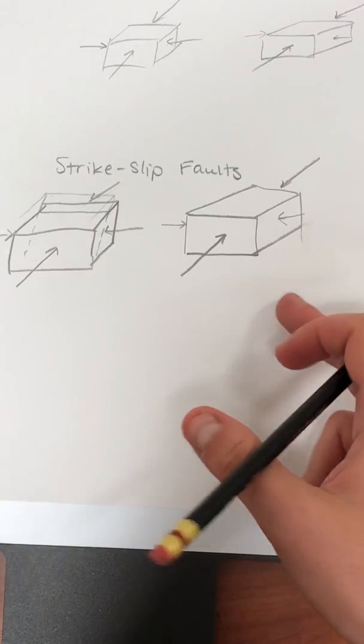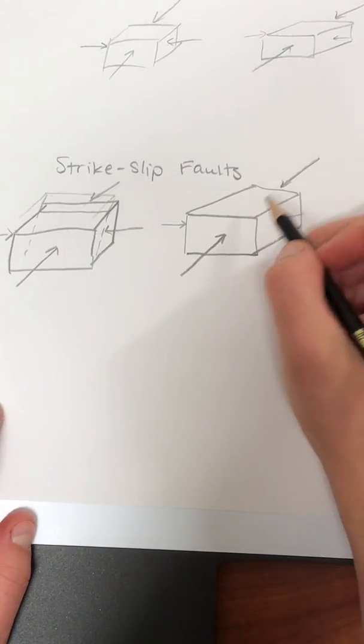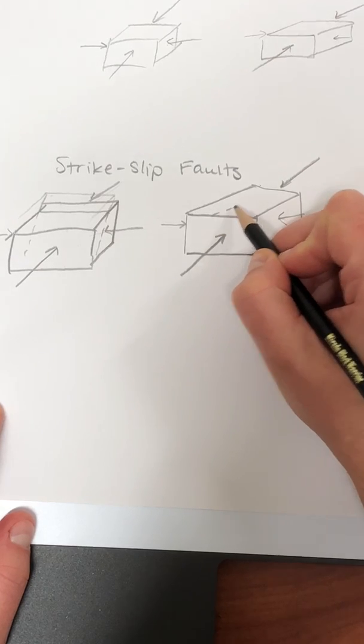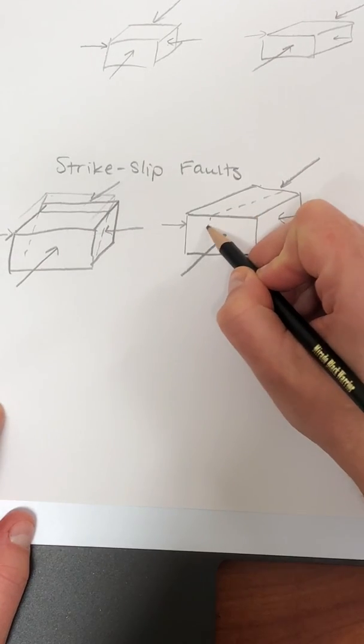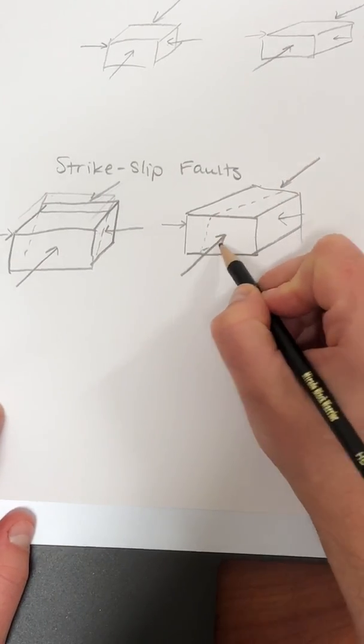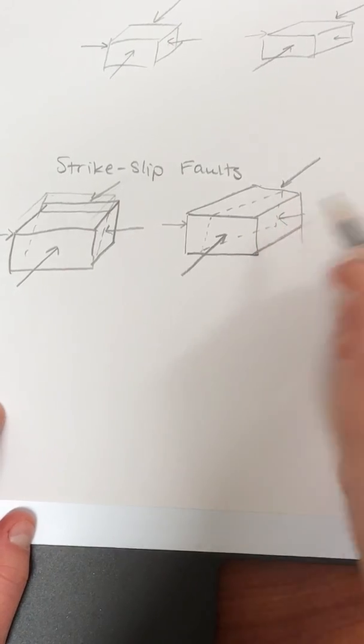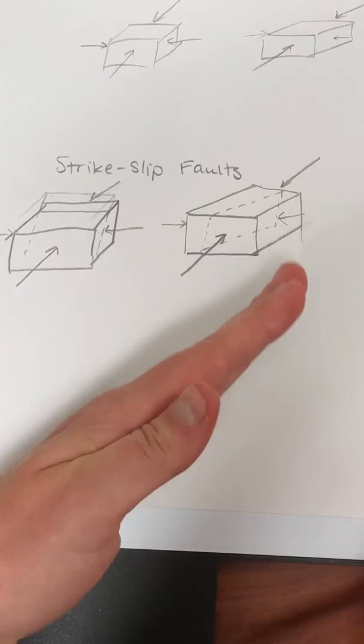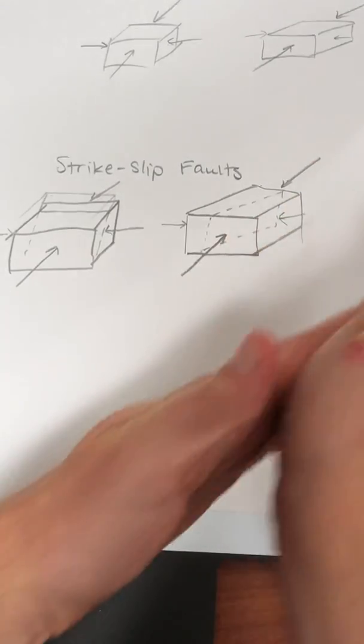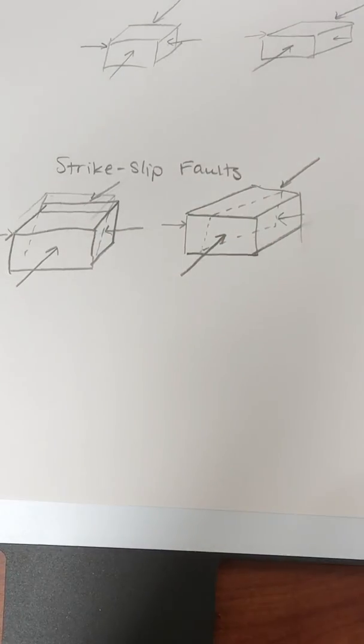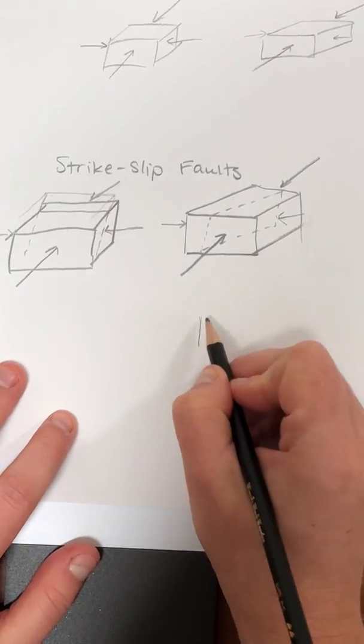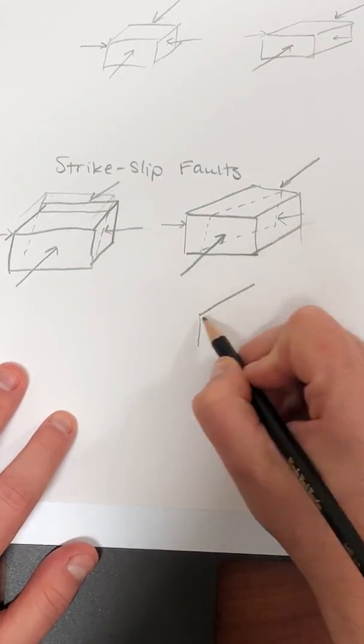So what happens in this scenario is that the block kind of has a different fault plane. It's almost like it's vertical and so we're gonna slide the block back and forth from the sides. So I'm going to draw a simple picture of what something like this might look like.